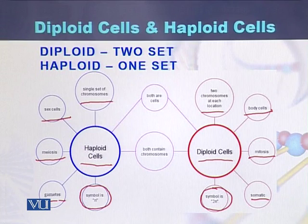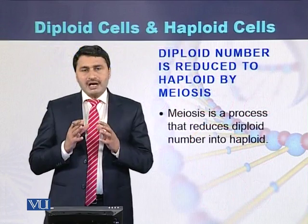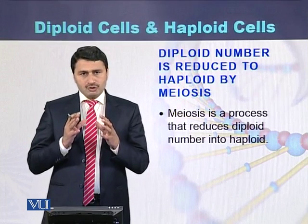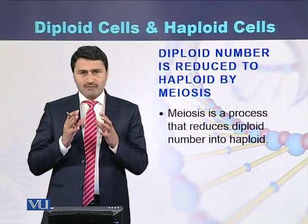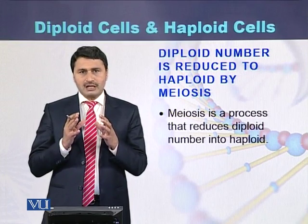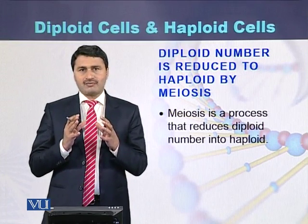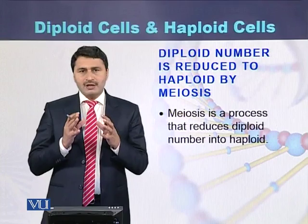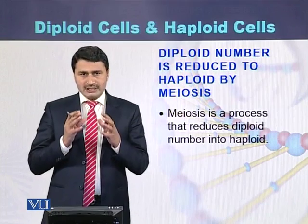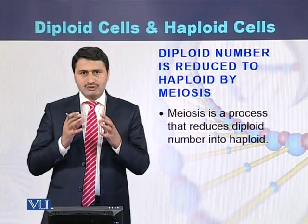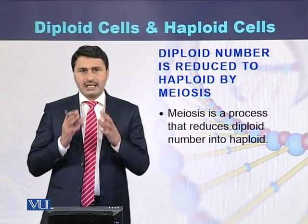The difference between diploid and haploid cells: diploid cells contain 2 sets of chromosomes while haploid cells contain a single set of chromosomes. Meiosis is a process that converts the diploid cell into the haploid cell.